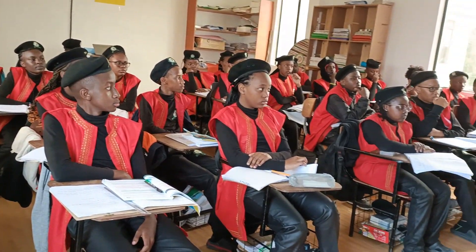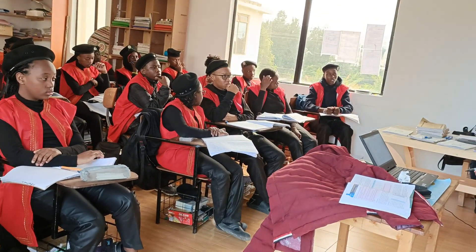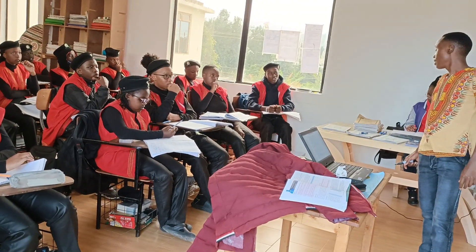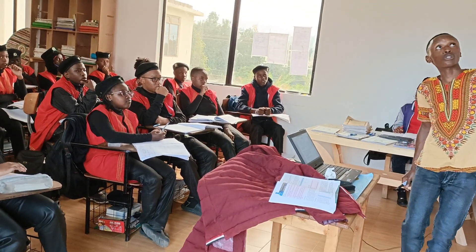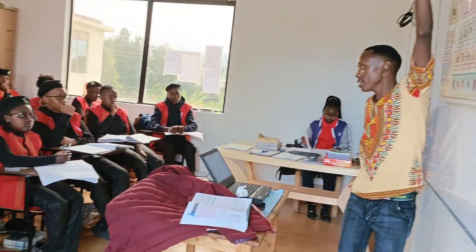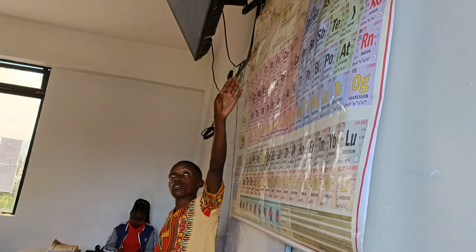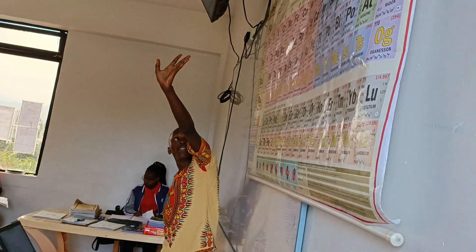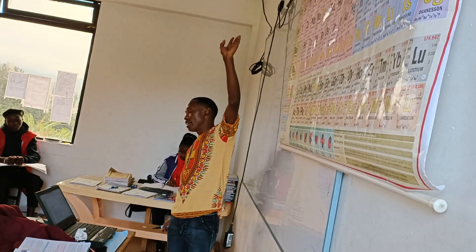Period — the number of energy levels. You realize there is period one: one energy level. Period two: two energy levels. Period three: three energy levels. Period four: four energy levels.